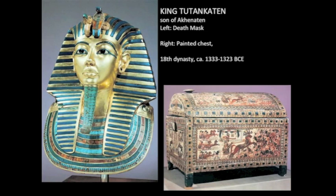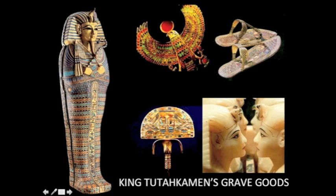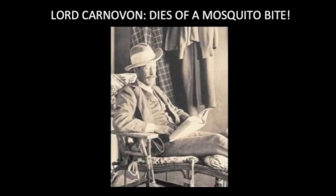Things discovered when the tomb of King Tut was opened include his golden death mask, encrusted with precious stones. His body was mummified and encased in three coffins: a golden coffin, a wooden coffin, and a stone sarcophagus. With him were astonishingly intricate grave goods: a golden fan, golden pharaoh slippers. King Tut was very minor and lived only until he was 19. In the tomb were two female fetuses, possibly his offspring. With King Tut, the 18th dynasty more or less came to an end.